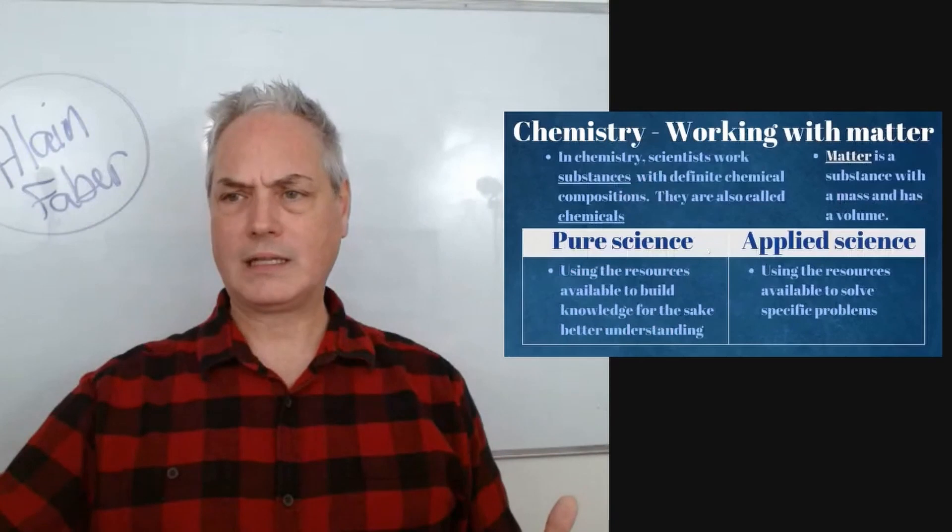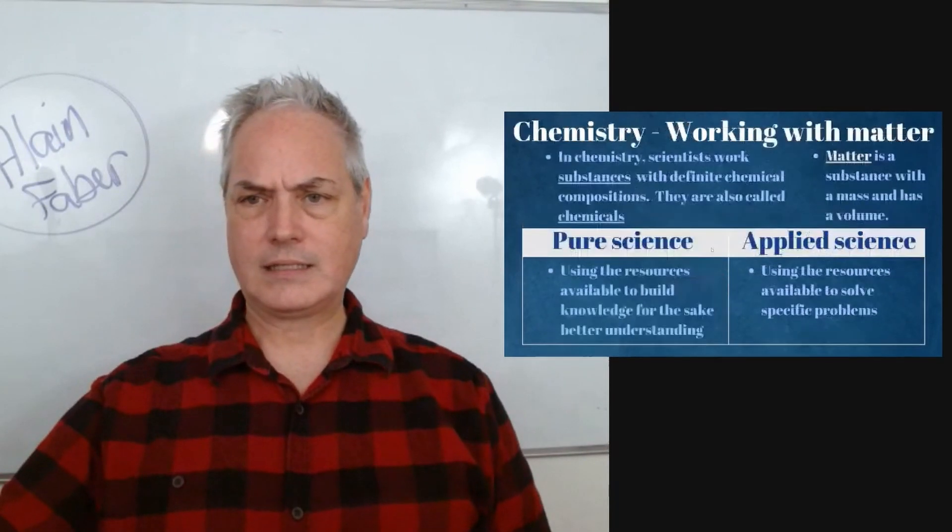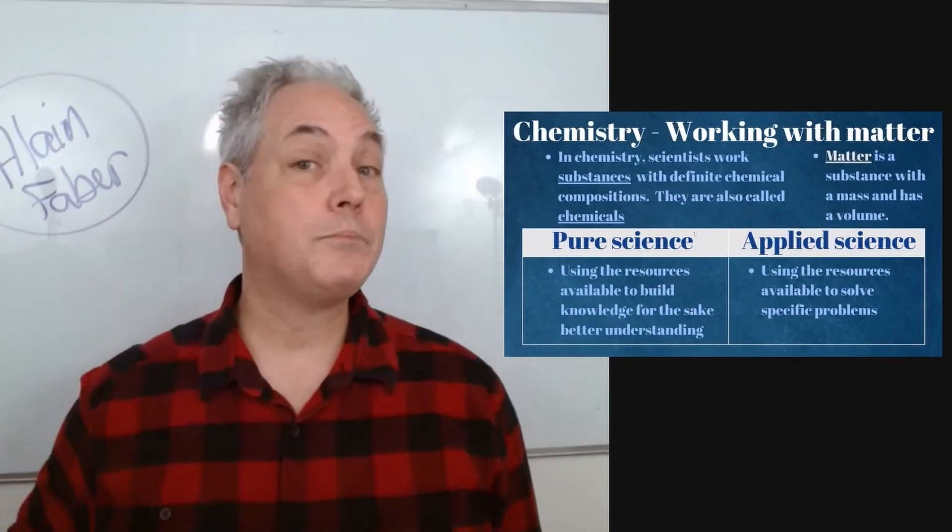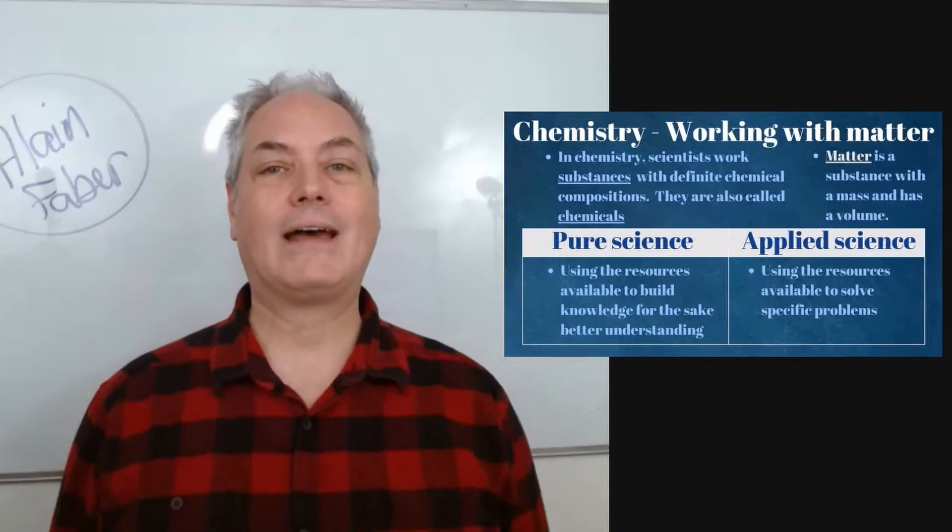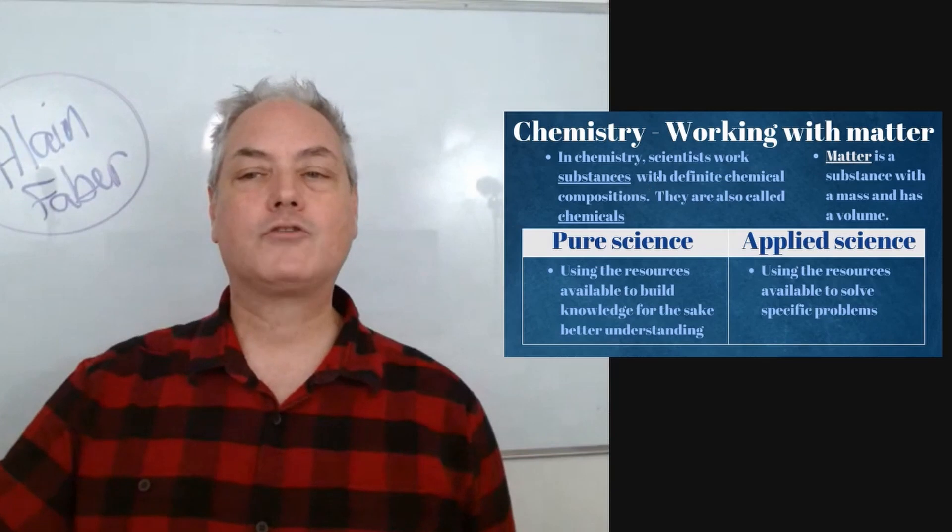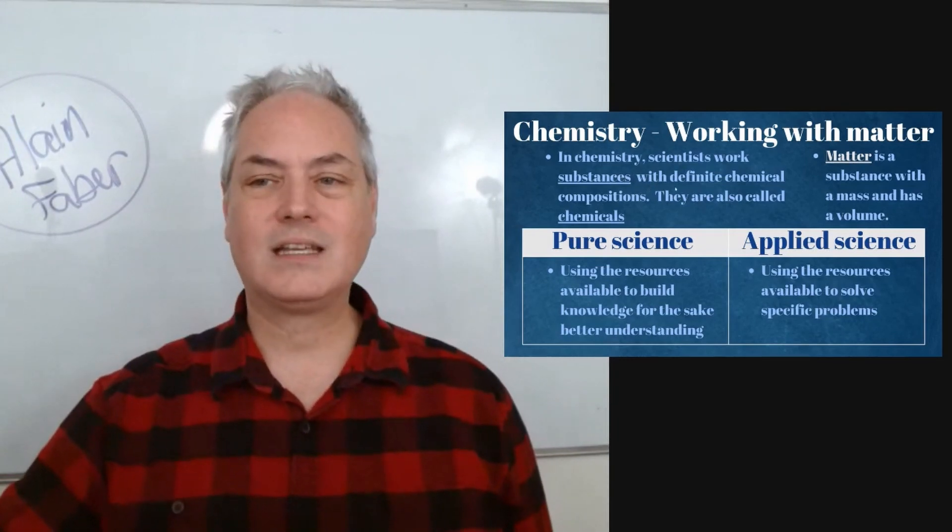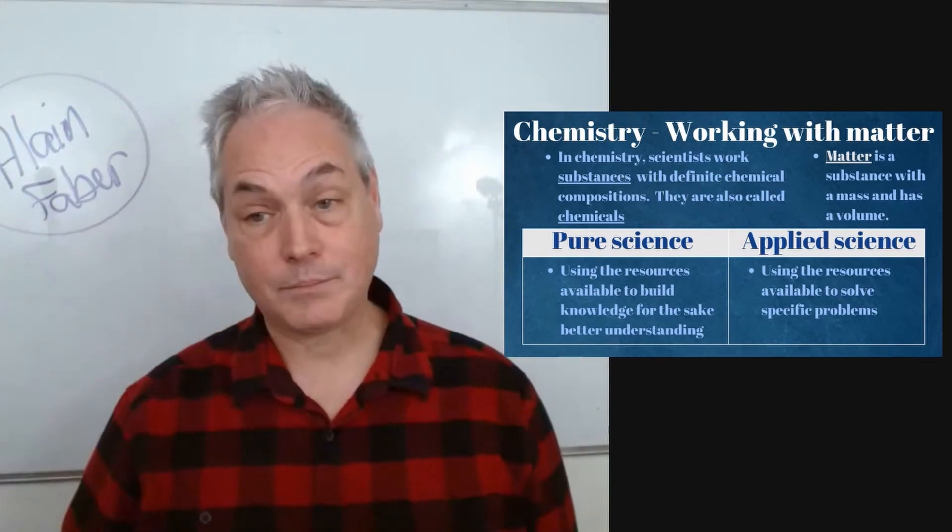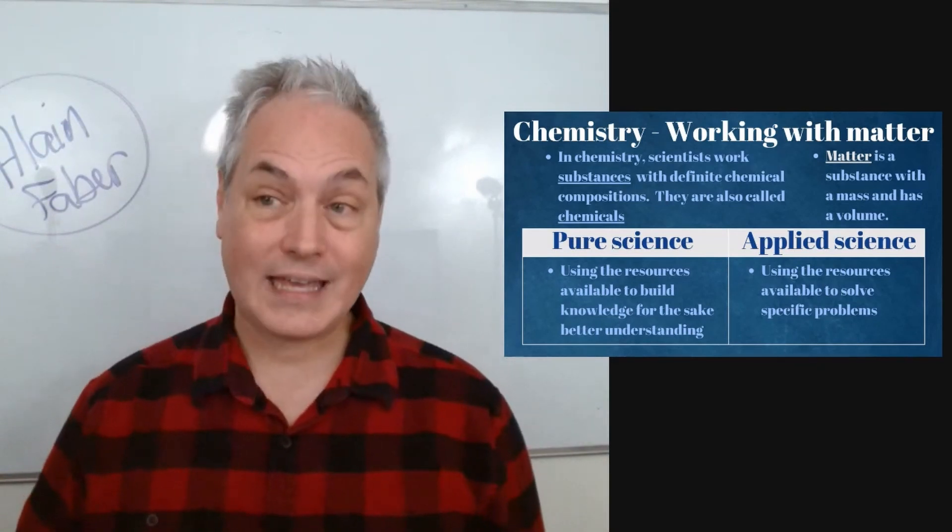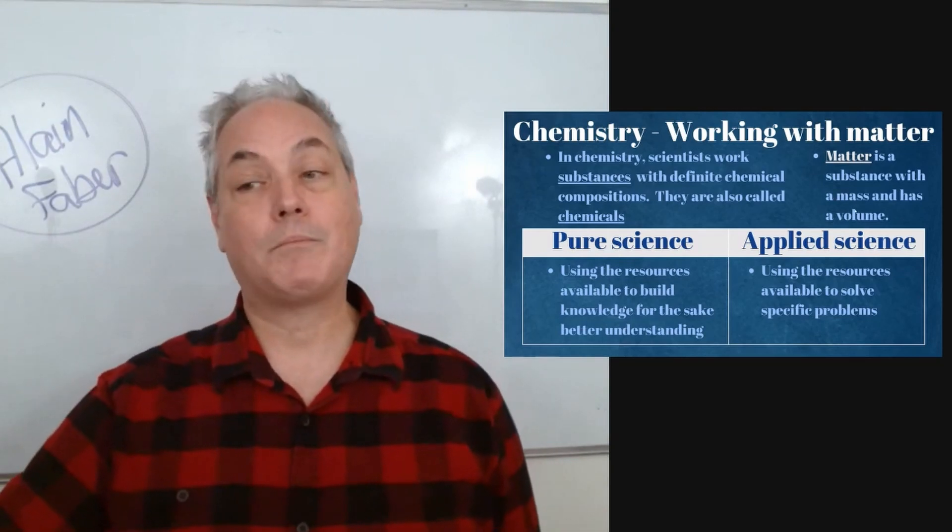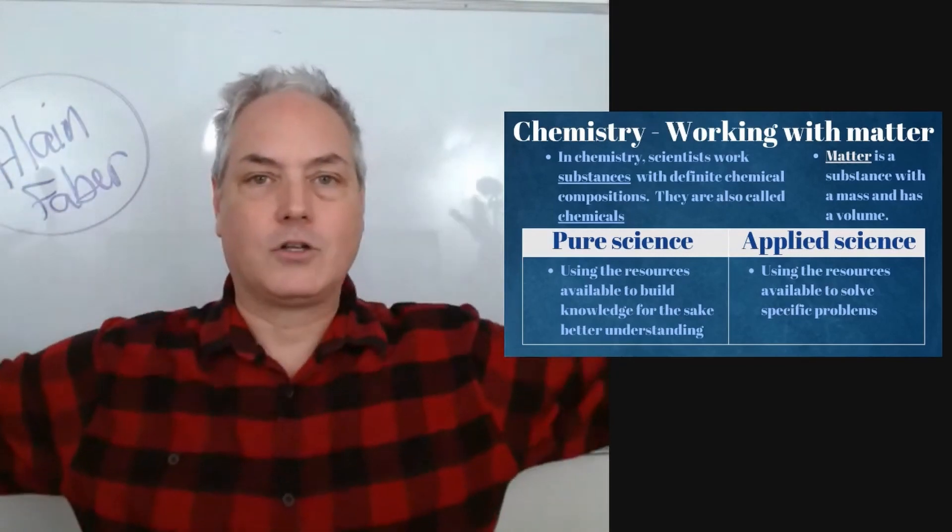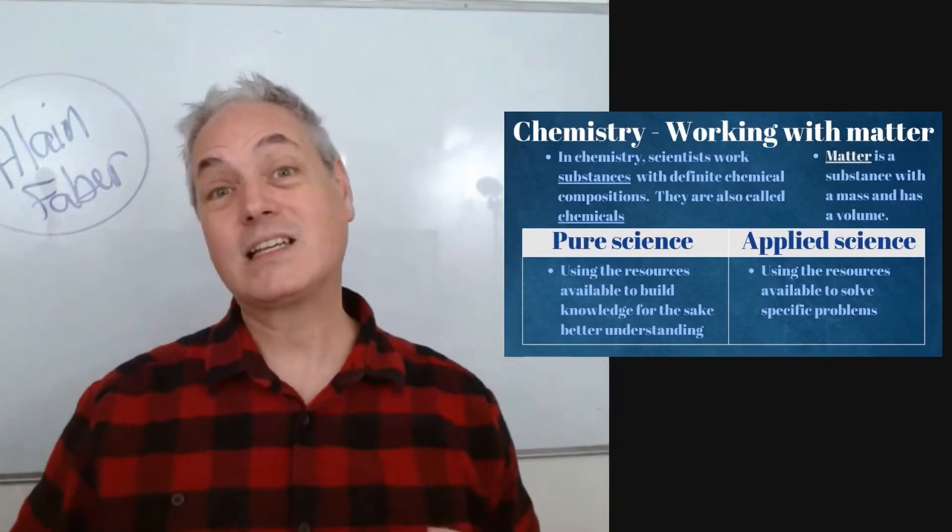Now, we can have science overall. There are different kinds of science. We have what we call pure sciences, and we have applied sciences. Chemistry here, we work with substances that have definite compositions. And these matter are called chemicals. And matter is a substance with a mass and has a volume. So this is what matter is. We are taking different matters, we are putting them together to do something we want. And that's kind of interesting.